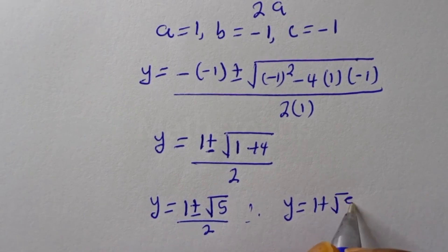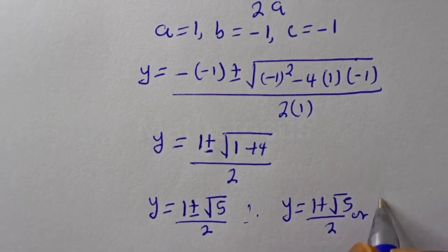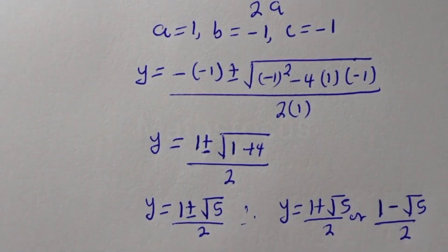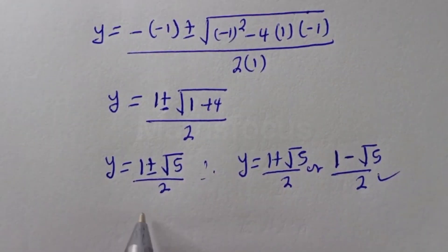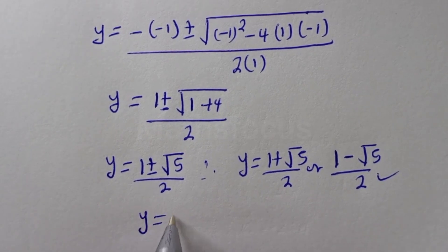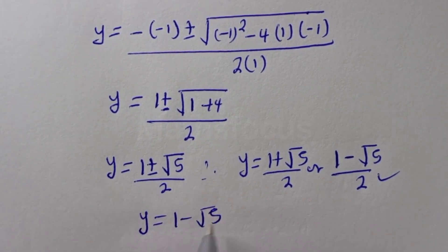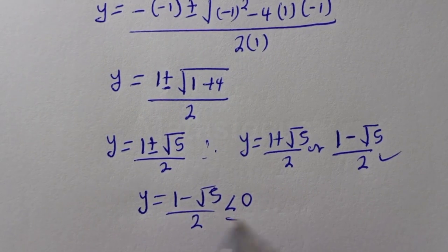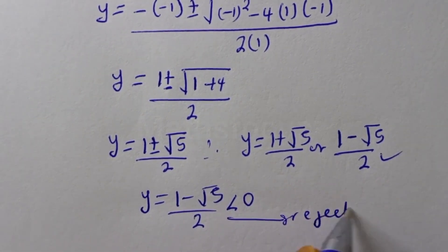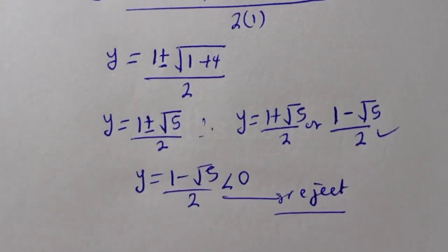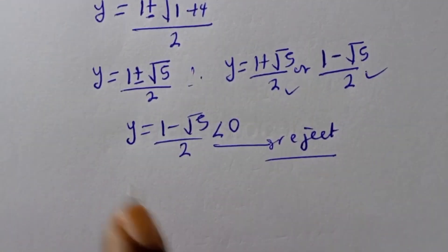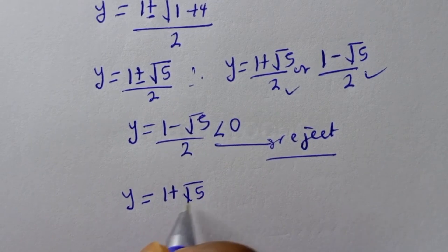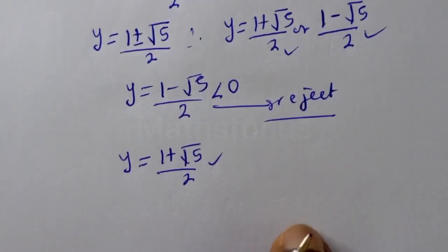So y equals 1 plus root 5 over 2, or y equals 1 minus root 5 over 2. The second case gives a value less than zero, so it is rejected. The only valid solution is y equals 1 plus square root of 5 over 2.